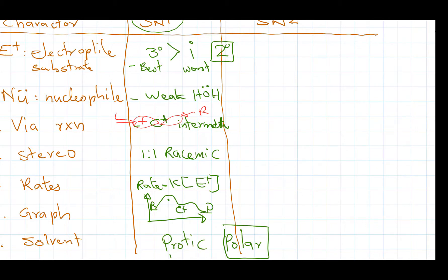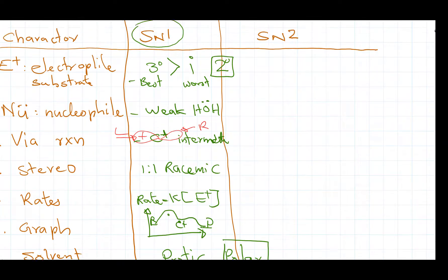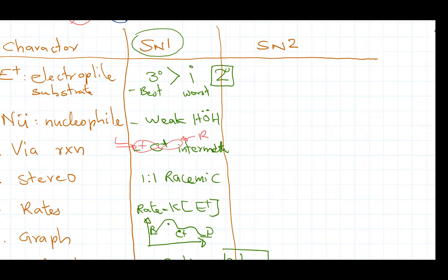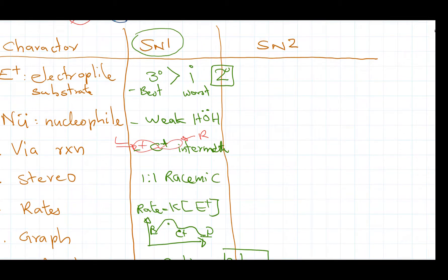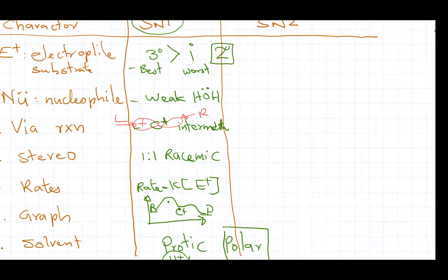Now in this case, we're going to use protic polar. The protic means there is a proton available. And just remember C plus and H plus can go together. They will not react with each other. So that's the point.